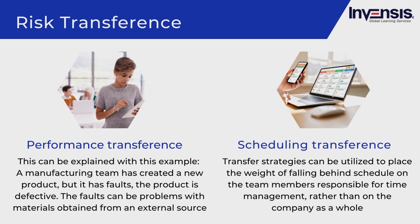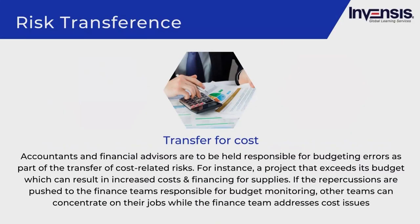Scheduling transference places the weight of falling behind schedule on the team members responsible for time management, allowing the production and design teams to concentrate on finishing their remaining tasks. For cost transference, accountants and financial advisors can be held responsible for budgeting errors, so that if a project exceeds its budget, production managers and team members can concentrate on their jobs while the finance team addresses cost issues.